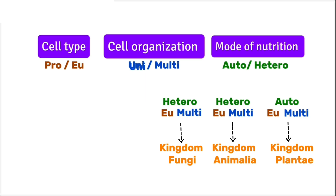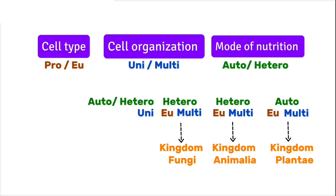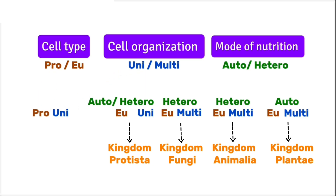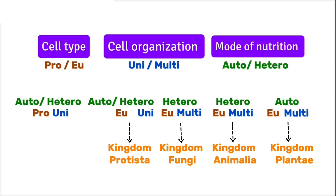Next, let's take an organism that is unicellular — its mode of nutrition may be autotrophic, heterotrophic, or even both — but eukaryotic. Then this belongs to Kingdom Protista. Now, what if the organism is unicellular and prokaryotic, meaning it has no true nucleus? It can be either autotrophic or heterotrophic. This is a moneran, placed in Kingdom Monera.